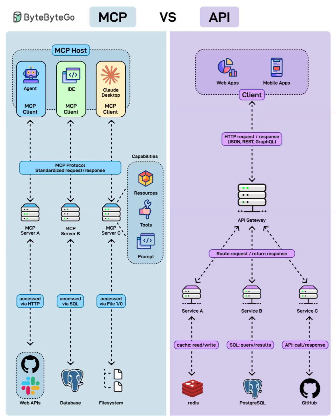Let's summarize the differences quickly. Purpose: APIs connect software components; MCP connects AI-native agents and tools. Discovery: APIs need human-readable docs; MCP is self-describing. Standardization: APIs vary across styles; MCP aims for one unified protocol for LLMs, agents, and IDEs.